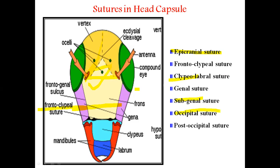The occipital suture refers to grooves running across the back of the head, behind the compound eyes, present in between the vertex and occiput. The post-occipital suture is the line of fusion of the maxillary and labial segments at the back of the head, present in between the occiput and post-occiput.